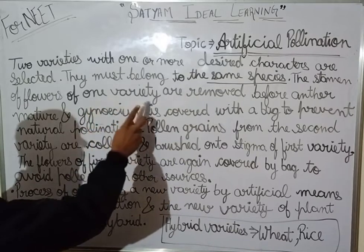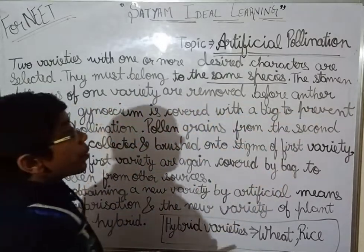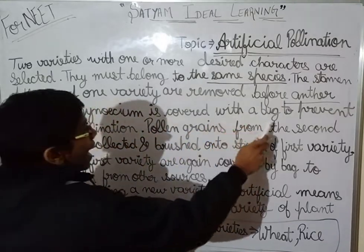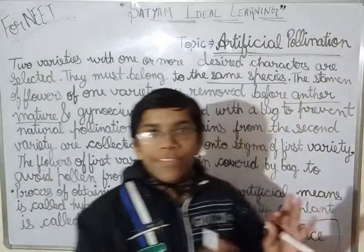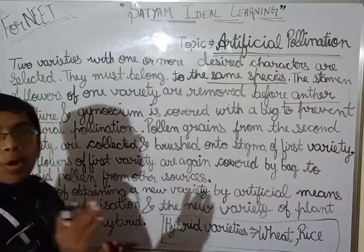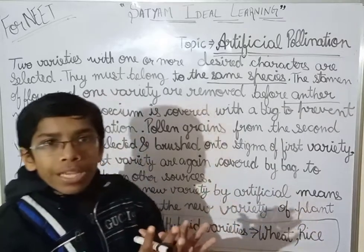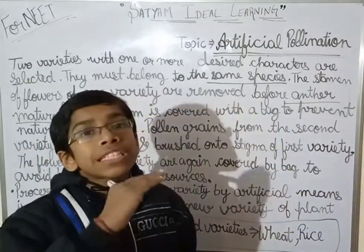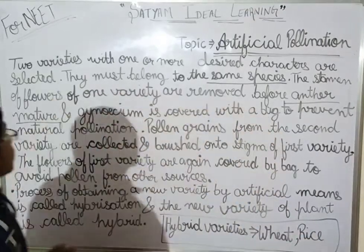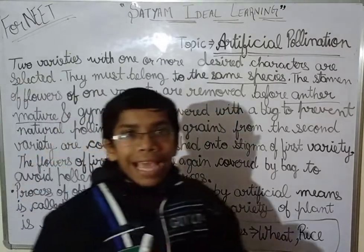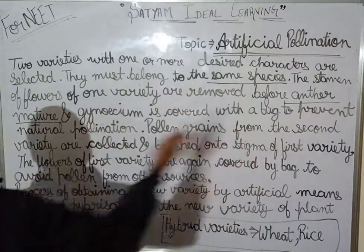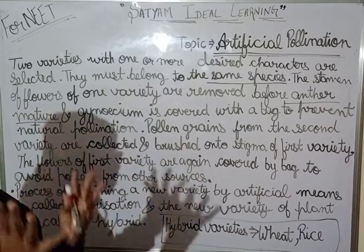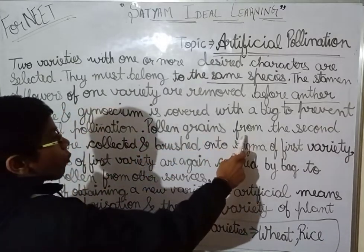You have to cut the stamen before the anther matures. Then the gynoecium is covered with a bag. One variety will have no stamen — only gynoecium — and then we cover the gynoecium with a bag to prevent natural pollination so that natural pollination cannot occur.